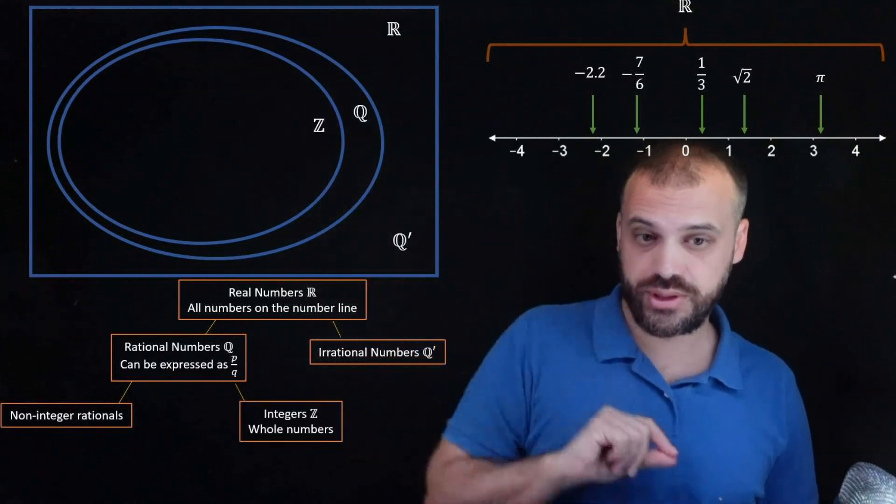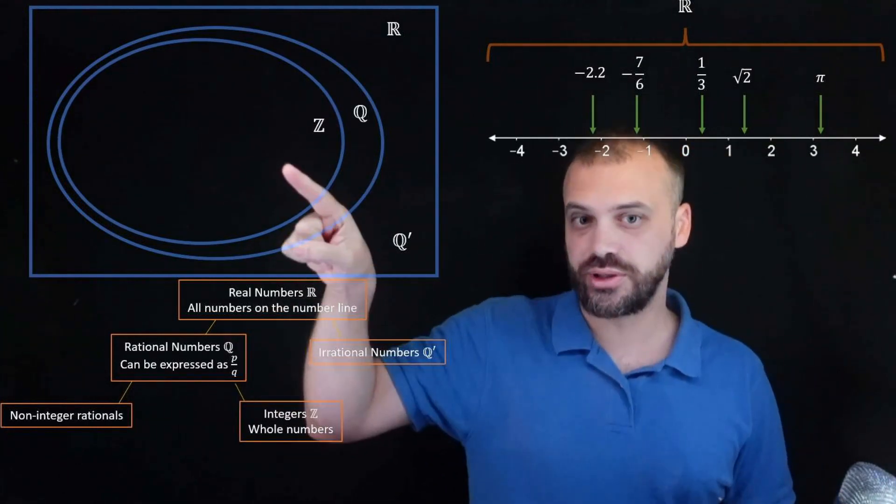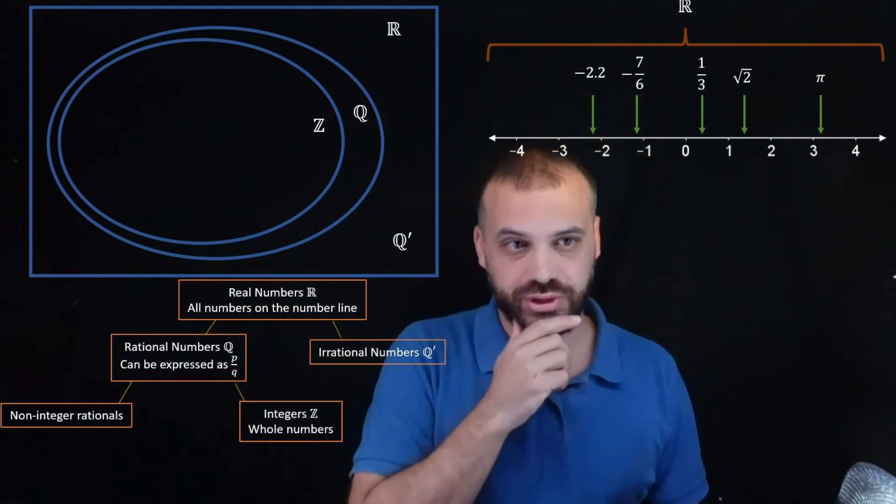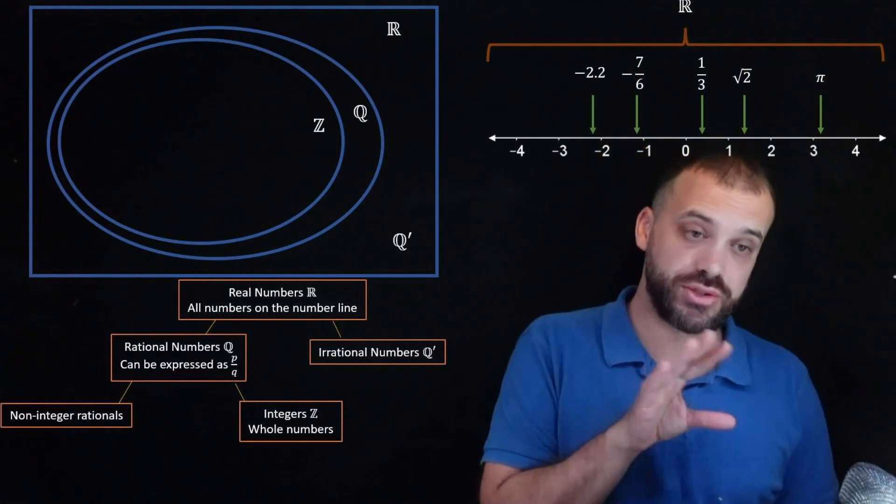We've got these ones right here. So look at our little diagram here. All integers are rational numbers. So what's an integer? Well we have two kinds of integers.